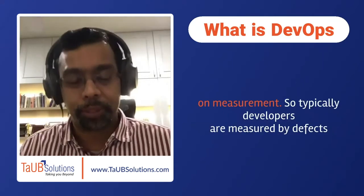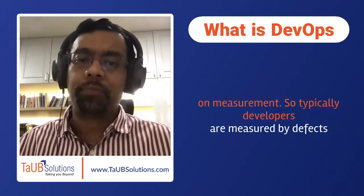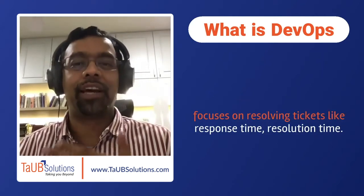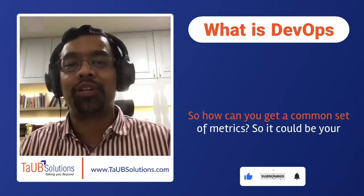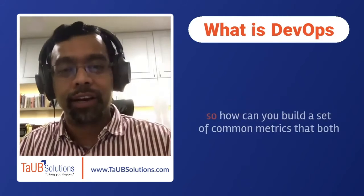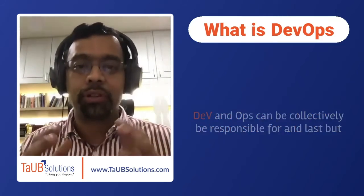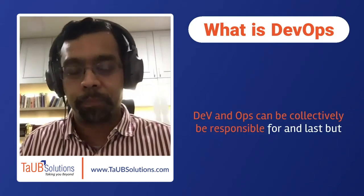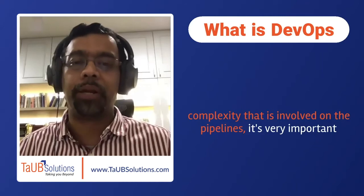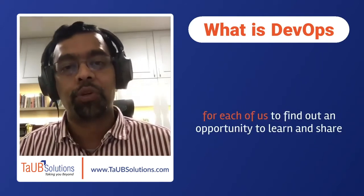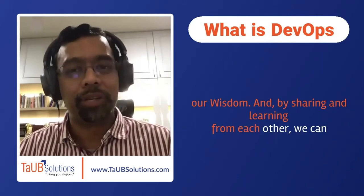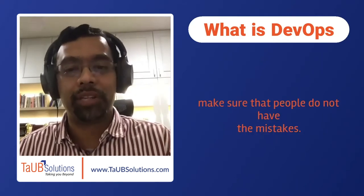Then we need to focus on measurement. Typically, developers are measured by defects per lines of code, and the operations team focuses on resolving tickets with metrics like response time and resolution time. How can we get a common set of metrics? It could be stability, deployment frequency, or change failure rate — a set of common metrics that both dev and ops can collectively be responsible for. Last but not least is sharing. Because of the complexity involved in pipelines, it's important for each of us to find opportunities to learn and share our wisdom, so that people do not repeat the same mistakes.